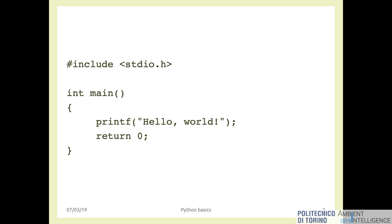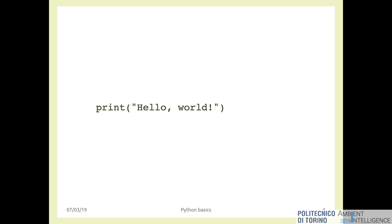Then there is printf to print 'Hello World' on screen, return zero to say everything is fine, and stop. So this is a six-line program for printing Hello World in C. It's not particularly different in other programming languages like Java, for example. And this is the Python equivalent.